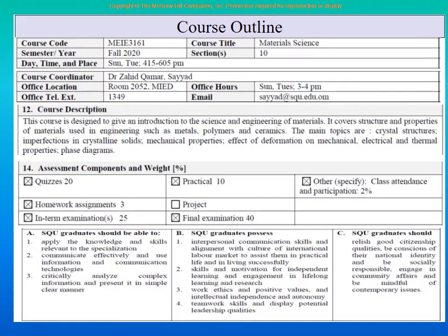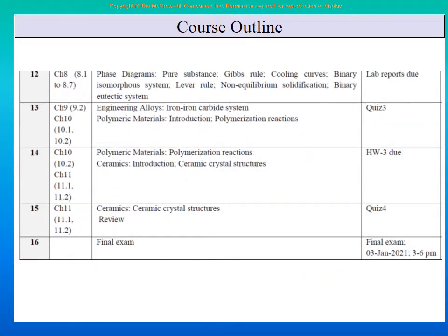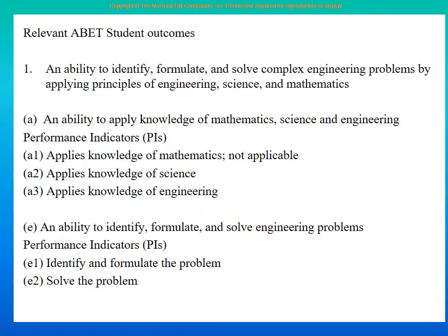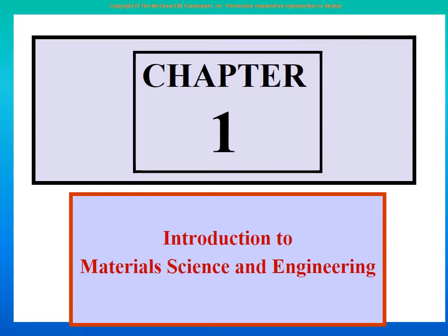Then I started briefly talking about the course outline and description — what are the different topics we will be covering, what are the major outcomes in terms of what SQU wants in their graduates. We also covered the course outline in terms of weekly lectures. The midterm exam and the final exam will be as listed, decided either by the department or by the deanship. We also told you about student outcomes and the performance indicators — 1A, 4J, and so on — which the course covers.